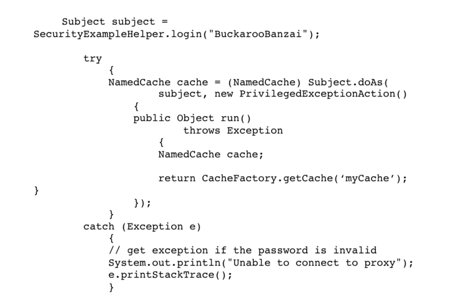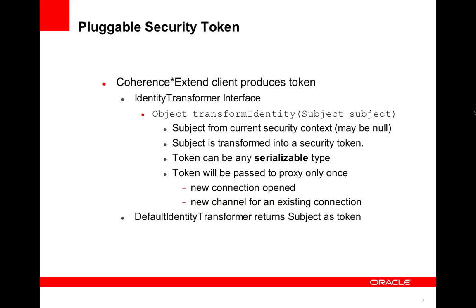Here's a really simple example of client code. It starts with a login, in which case in the real world you would do some real authentication — the examples have a very simple version of authentication. The next section is just normal Java subject doAs, with a privileged exception action to get the cache. That cache reference — what cache factory getCache returns — is now associated with that subject in the subject doAs. That's just what a client does, and as I said, there's nothing special about that code. That's just normal Java code. But what's happening behind the scenes is that the client will produce a security token.